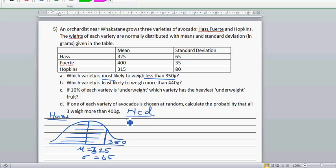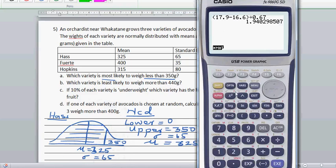Let me write the values so you can enter them on the calculator. Lower is 0, upper is 350, your standard deviation is 65 grams and the mu is 325. You can get the answer by just entering this on the calculator.